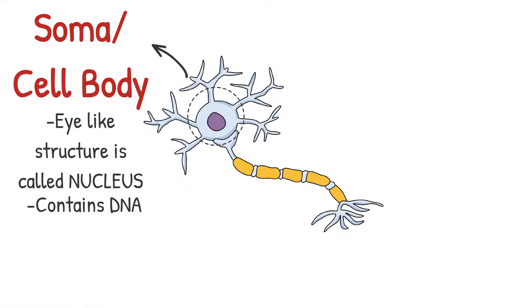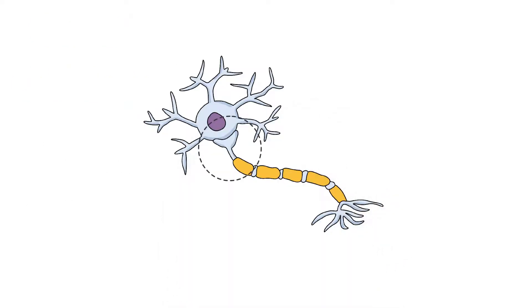If the signals from the dendrite are strong enough, the information is processed by the soma and put together here at this junction called the axon hillock.